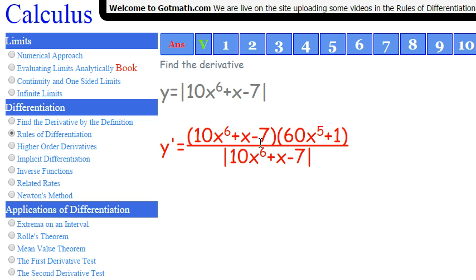Alright, so we just rewrite it in absolute value signs, take the derivative, and then rewrite the whole thing down at the bottom. There you go. Simple as that.